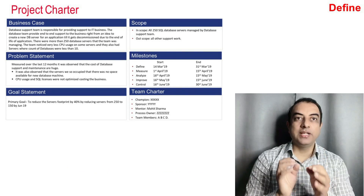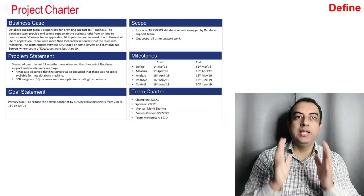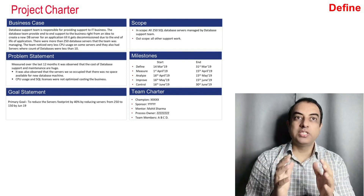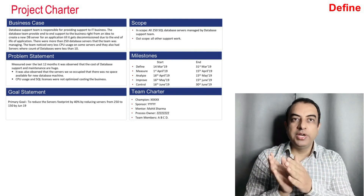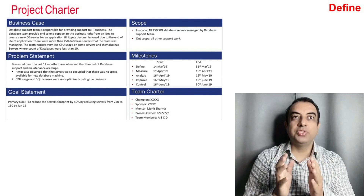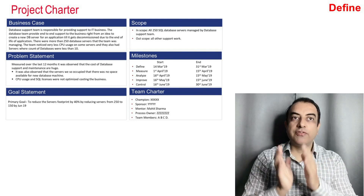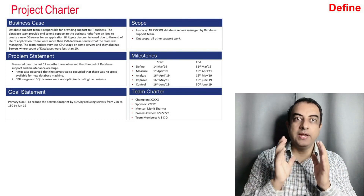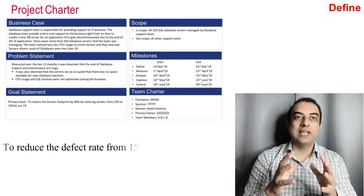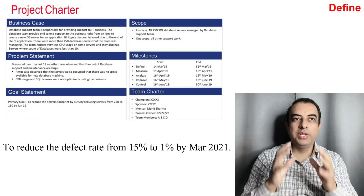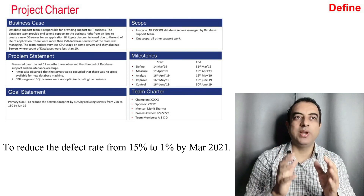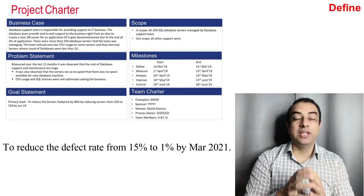Next comes the goal statement, which is for the project team. The team should create a SMART goal statement. The goal statement should start with 'to reduce' or 'to improve' kind of statements, and it should have a 'from' and 'to' value. The goal statement should also be time-bound — for example, 'to reduce the defect rate from 15% to 1% by March 2021' is a SMART goal statement.